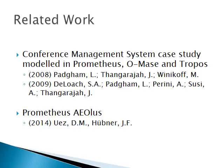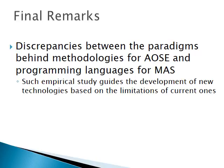We conducted an empirical evaluation of existing agent-oriented software engineering approaches instead of proposing new ones. We used a multi-agent system case study to highlight a number of discrepancies between the paradigms behind methodologies for agent-oriented software engineering and programming languages for multi-agent systems. In particular, we focused on Prometheus as the agent-oriented methodology and JaCaMo as the framework for multi-agent programming. We highlighted aspects of multi-agent systems not covered or not aligned by models in Prometheus when JaCaMo is considered as the coding platform.